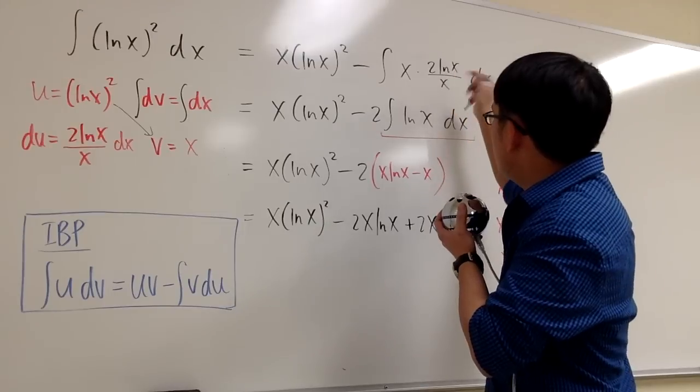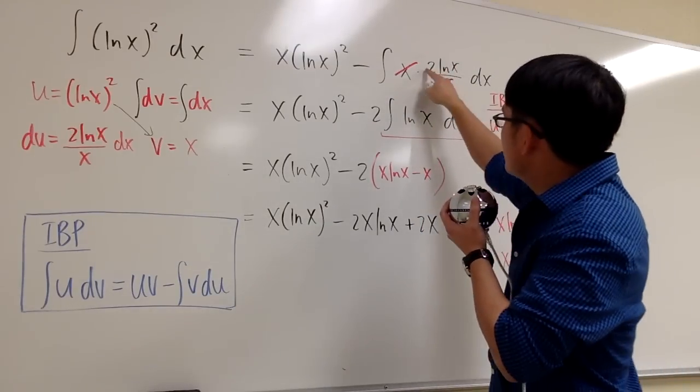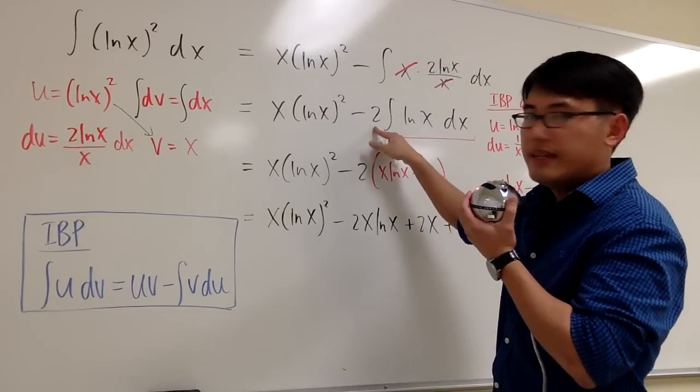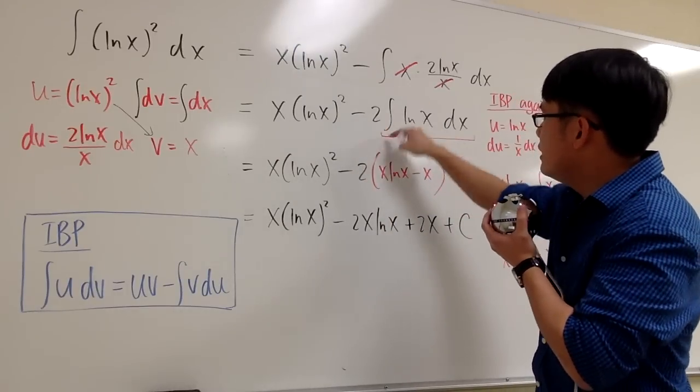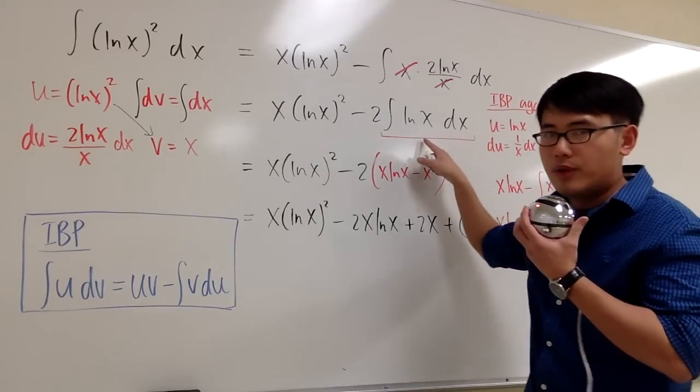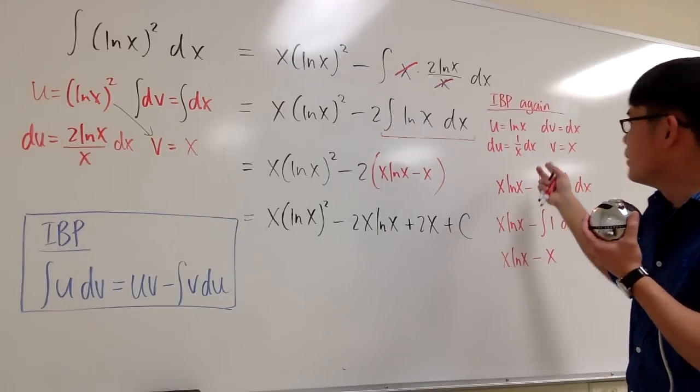This x and that x cancel each other out. And then here we also have a number 2. We can take the 2 outside of the integral. And then we're looking at this part as negative 2 integral of ln x dx. And then how are we going to integrate ln x? We have to use integration by parts again.